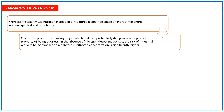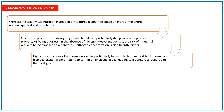One of the properties of nitrogen gas which makes it particularly dangerous is its physical property of being odorless. In the absence of nitrogen-detecting devices, the risk of industrial workers being exposed to a dangerous nitrogen concentration is significantly higher.